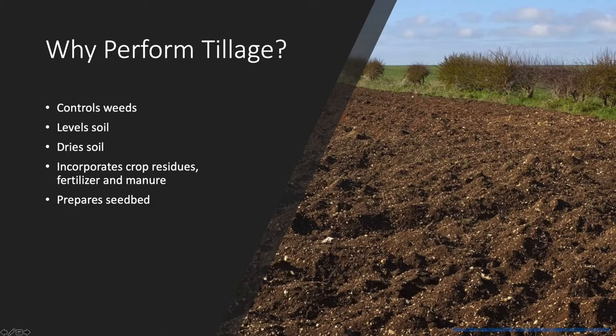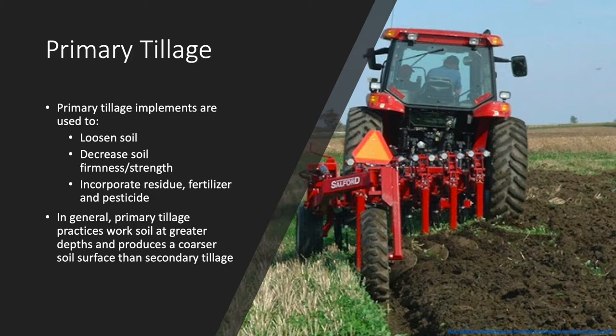There are two main types of tillage that classify different implements. These are called primary tillage and secondary tillage. Primary tillage implements assist with the initial soil loosening, which decreases the soil's firmness or strength, and can incorporate residue, fertilizer, pesticide, and manure into the soil. In general, primary tillage implements operate at greater soil depths and produce a coarser soil surface in comparison to secondary tillage.